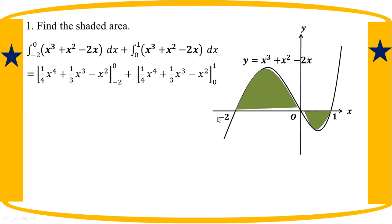The area between the curve and h, a². Upper limit is 0, lower limit minus 2. Upper limit is 1, lower limit is 0.